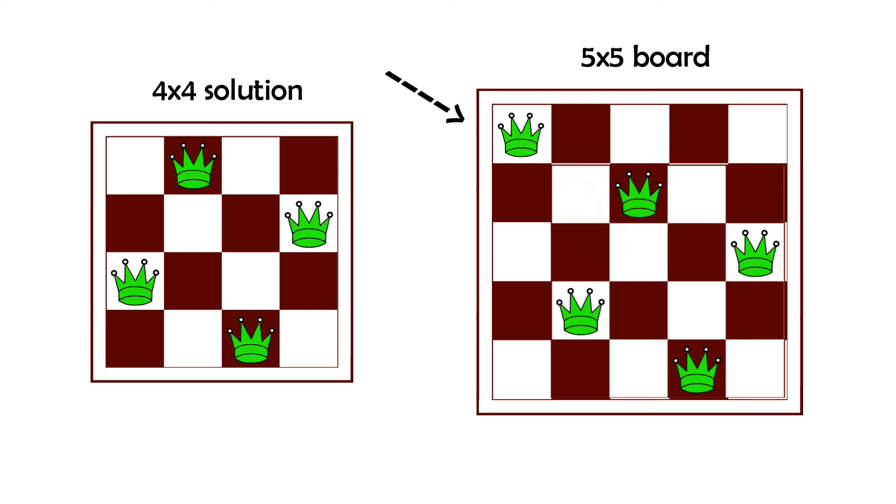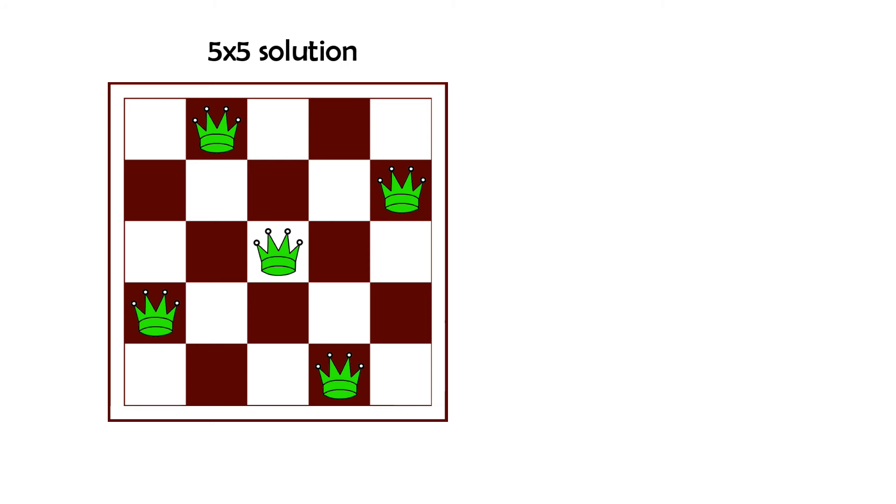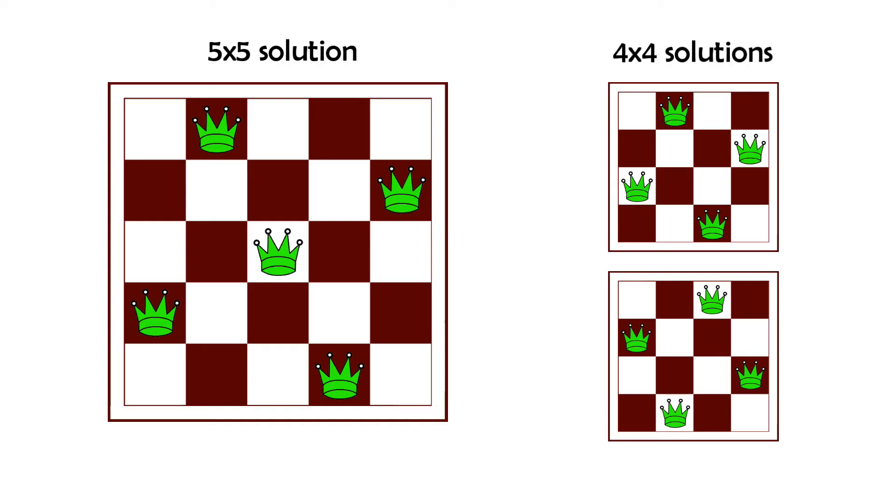However, the problem with this method is that it isn't really consistent. There are certain cases where there's a valid solution, but it isn't found by this algorithm because it isn't an upgrade of any of the previous solutions. For example, this solution for the 5 Queens puzzle is totally valid, but it cannot be formed by adding a queen to any of the solutions of the 4 Queens puzzle. This means that although this algorithm is interesting, it isn't viable.